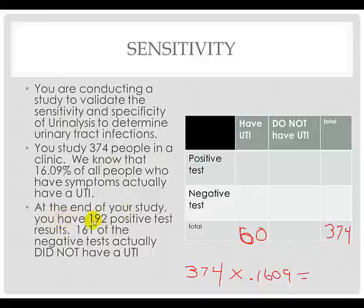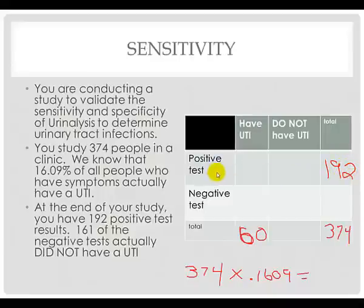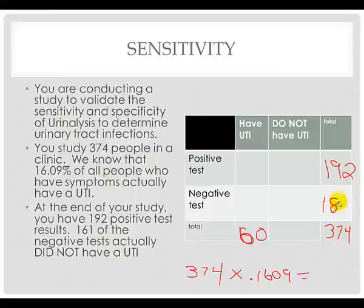At the end of our study, we know that we have 192 positive test results — 192 people, regardless of whether they had a urinary tract infection or not, have a positive test result. If there are 192 people who have a positive test result out of 374 people who are tested, we know that 182 negative tests were discovered in our study.